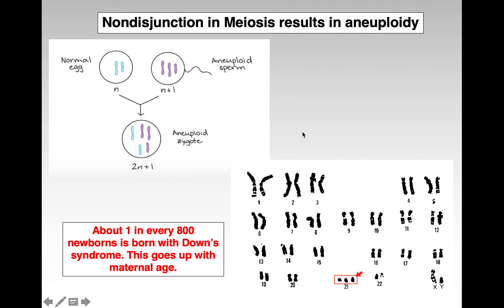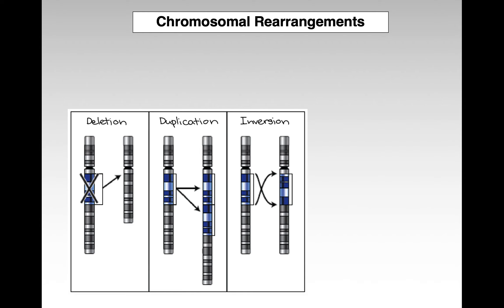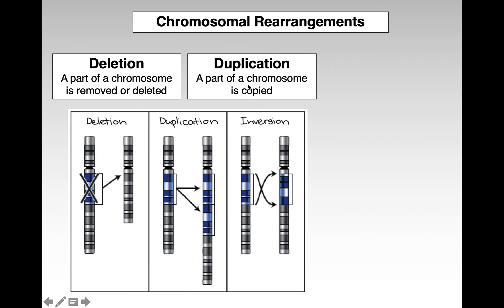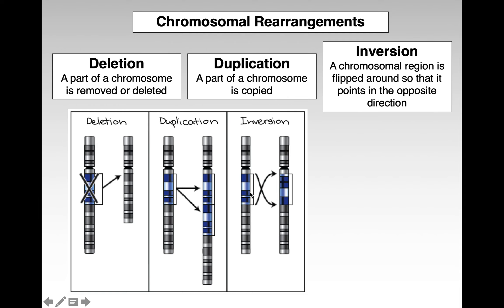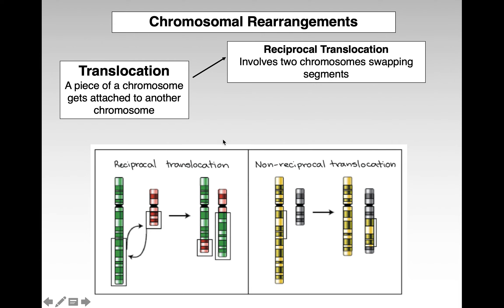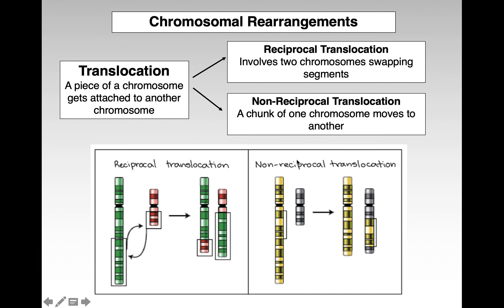There's some evidence that aneuploidy also goes up with paternal age, but the research isn't strong on that. You can also get chromosomal rearrangements: a part of a chromosome can be deleted, duplicated, or inverted. You can have translocations, where a piece of one chromosome gets attached to another. Reciprocal translocation is where they swap places; non-reciprocal translocation is where a chunk of one goes onto another. These don't necessarily result in major issues as long as the genes are intact, unless a gene sequence is disrupted right at the transition points.